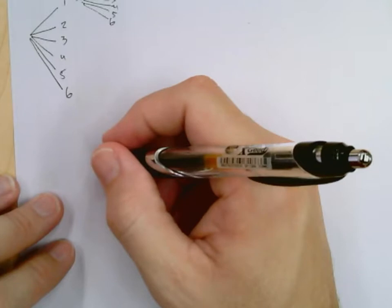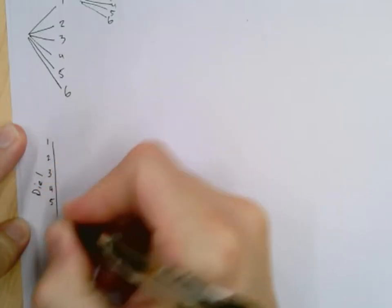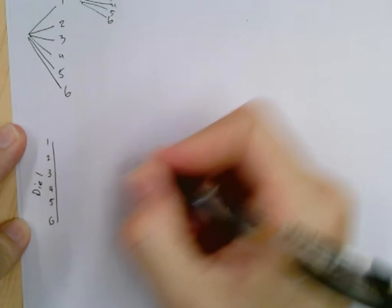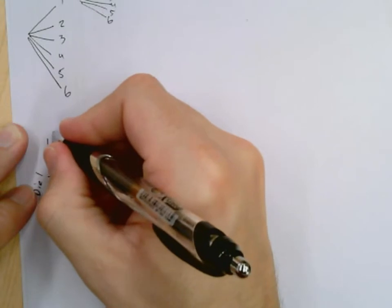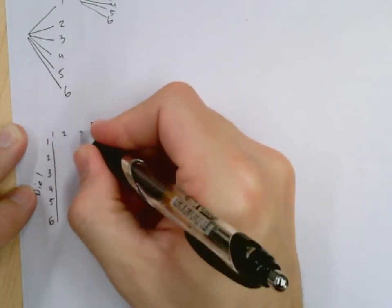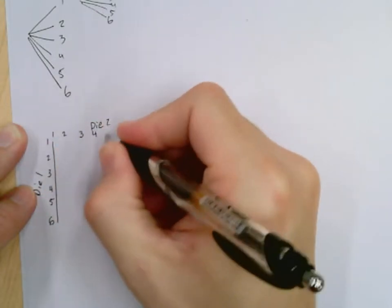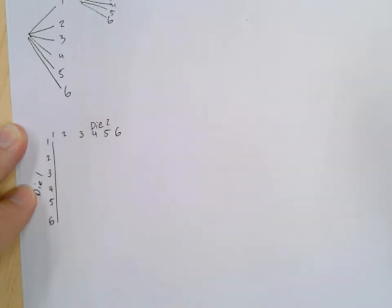So what we're going to do is we're going to create a two-dimensional grid. On the left-hand side, we're going to write everything for die one. So die one could be a one, a two, a three, a four, a five, or a six. Die two could also be a one, or a two, or a three, or a four, or a five, or a six.